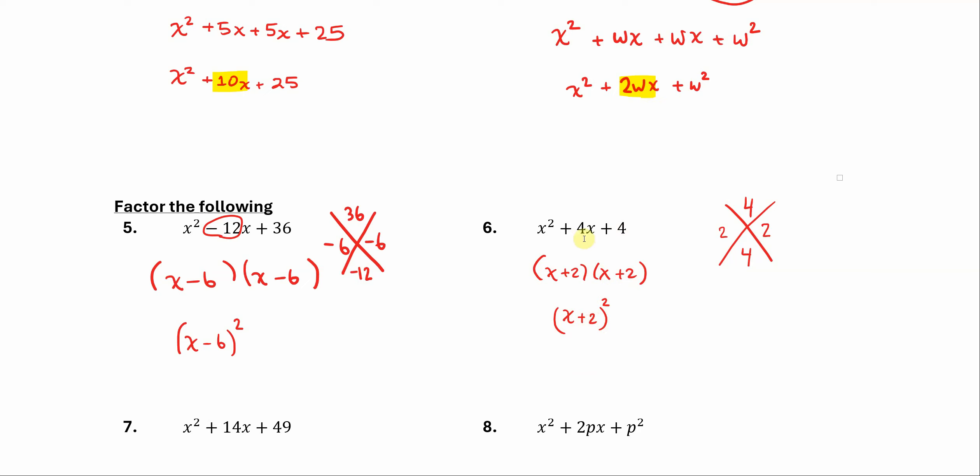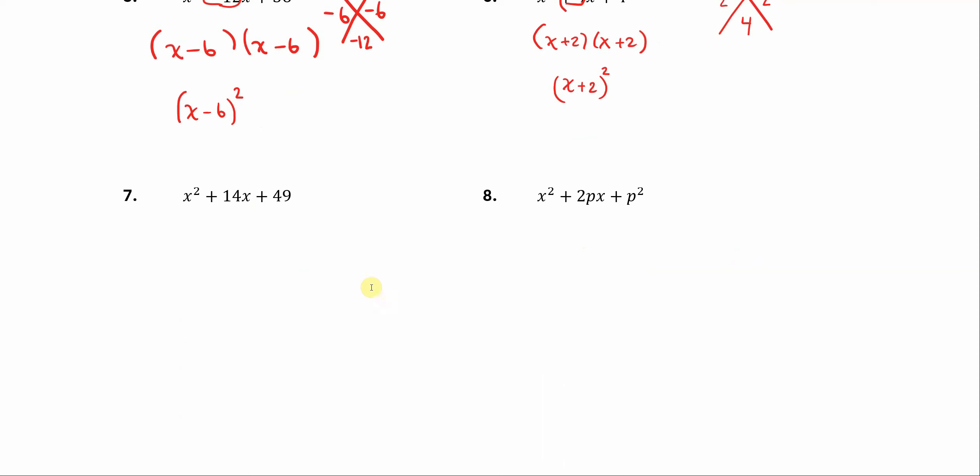And again, pay attention to the patterns that we have going on up there. We use this number here to double that and we get this number up here. All right, let's keep going. Two numbers that multiply to 49 but add to 14. So that would be 7 and 7, so this is x plus 7 times x plus 7, which gives us x plus 7 quantity squared.